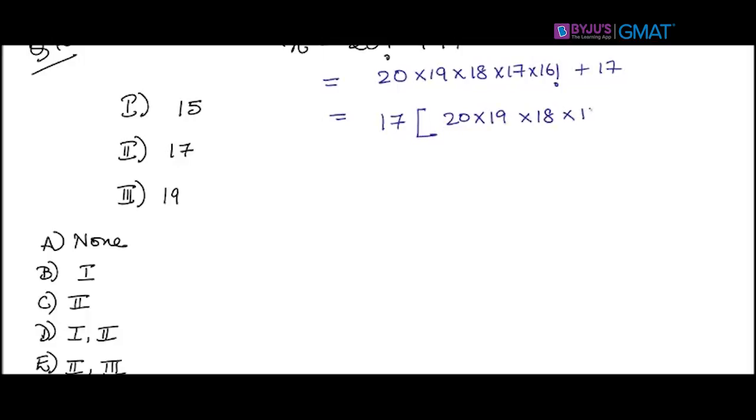Now this expression is clearly divisible by 17, so 2 is definitely in your answer option. Eliminate all the answer choices which do not have 2 in it, so a goes out and b goes out.